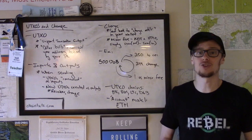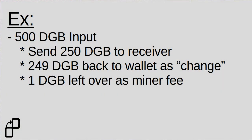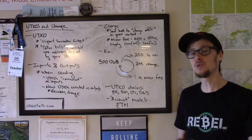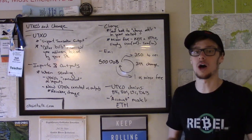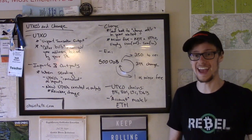Here's what this transaction actually creates and does. First, the transaction creates a new UTXO owned by the receiver's Digibyte address for the 250 Digibytes we want to send them. We still have 250 Digibytes left over, so the wallet will then create a 249-Digibyte change UTXO. This will generally go back to a different address still owned by your wallet, called a change address.